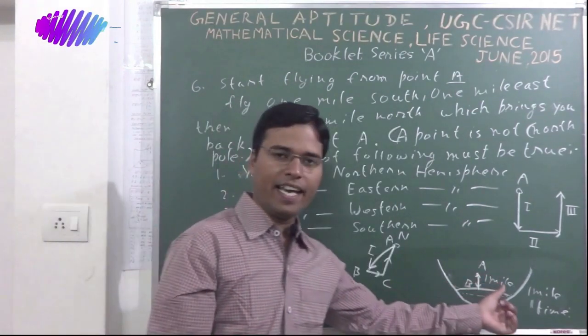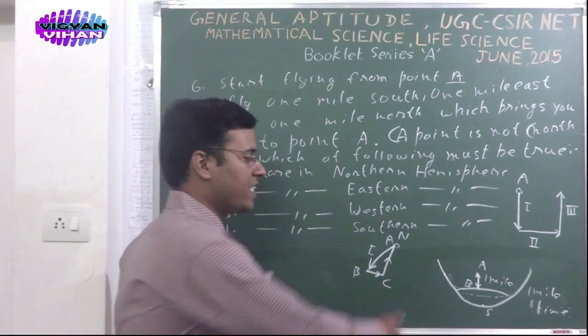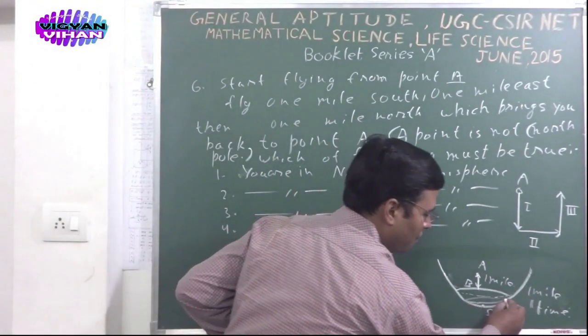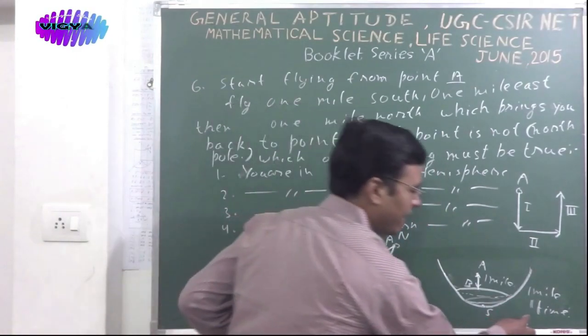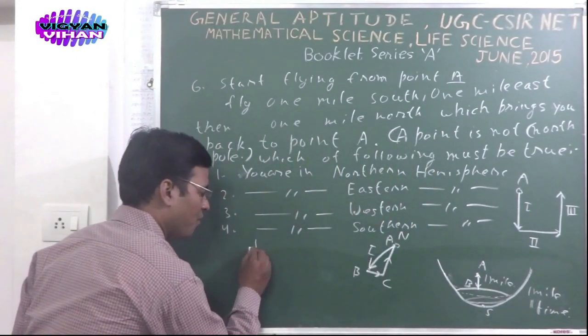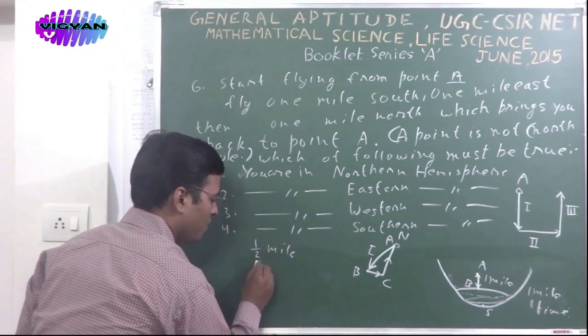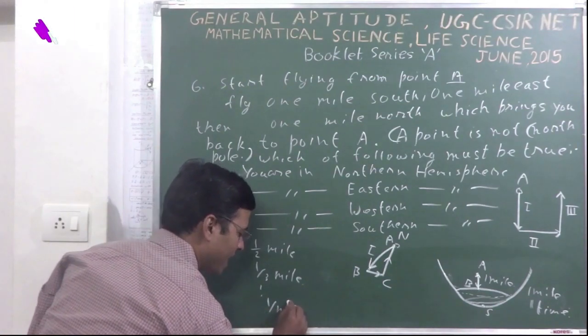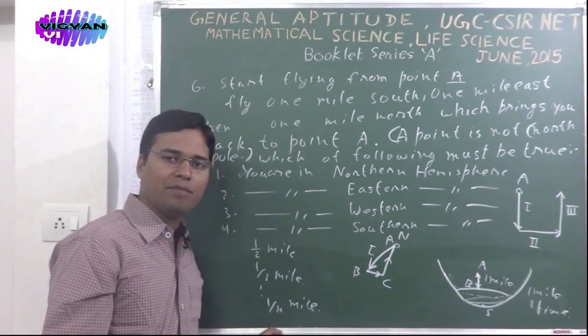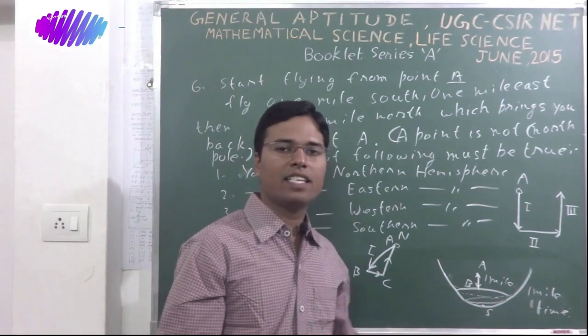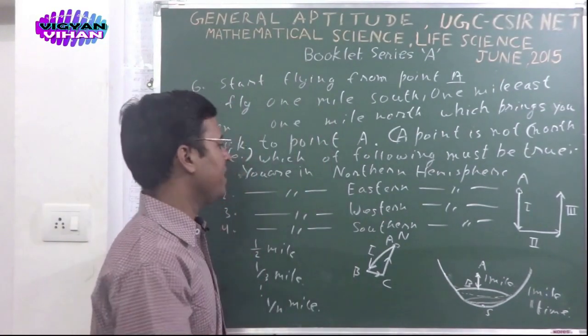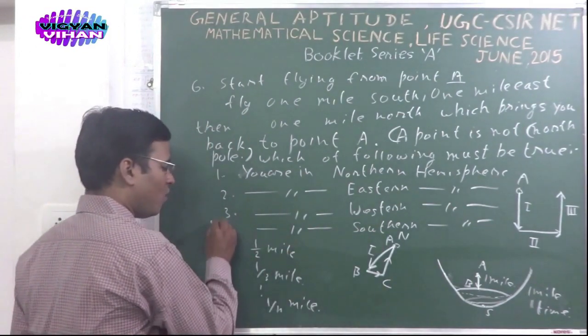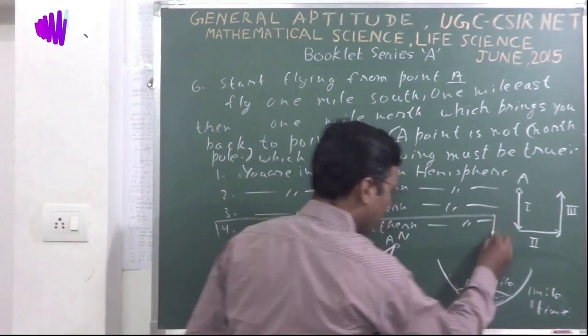Same condition will be for other circles which have their circumference like 1 by 2 mile, 1 by 3 mile, like this 1 by N mile, when N is some integer. So the correct answer of this problem would be: you are in Southern region. The correct option is option number 4.